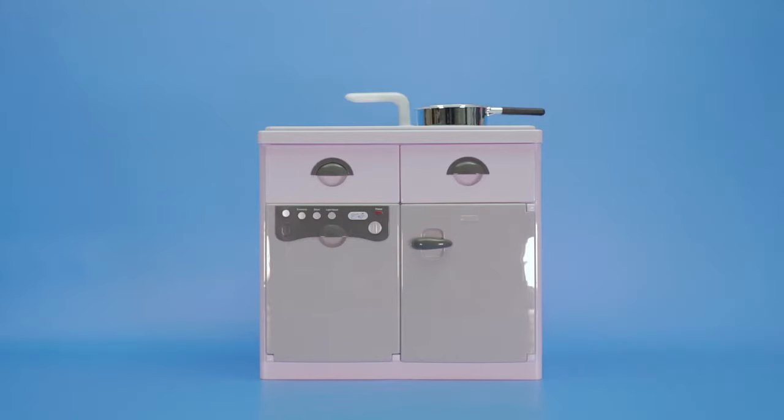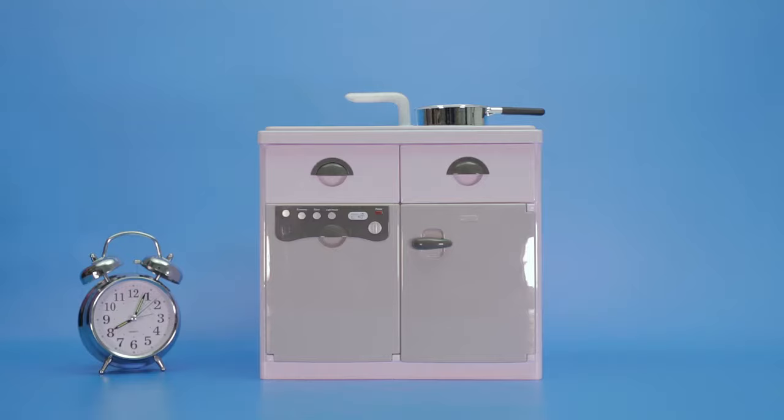For tough stains on cookware, sprinkle the area with a little baking soda and water, about 30 minutes before doing the washing up.